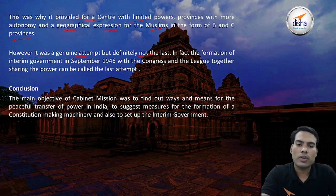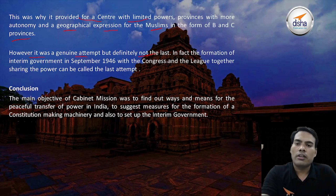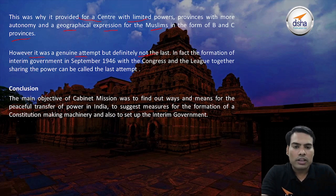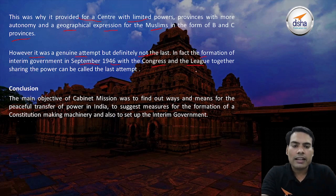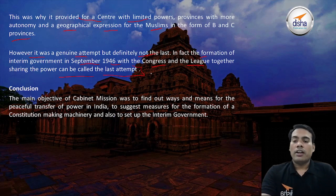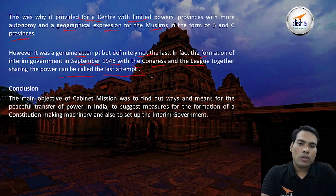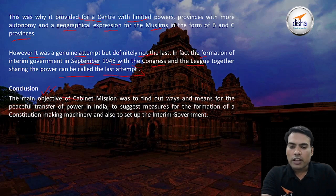This was a genuine attempt but not the last, because Lord Mountbatten was also here to dilute the dissensions between the Congress and Muslim League. In fact, the formation of the interim government in September 1946 with Congress and the League together sharing power can be called the last attempt. This is also explained here so we can conclude the answer.